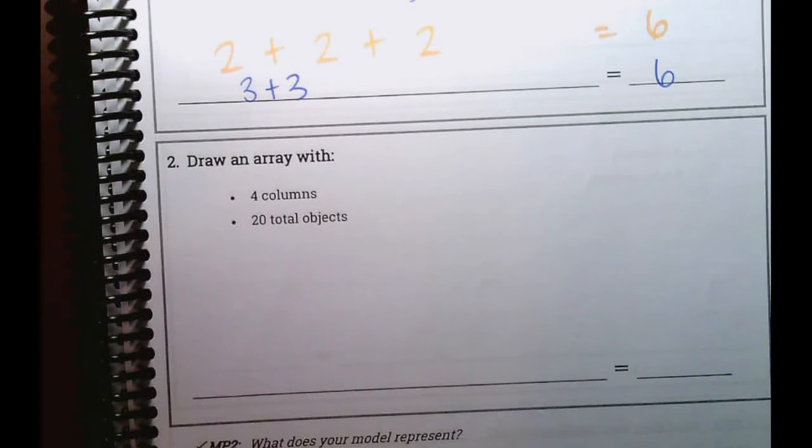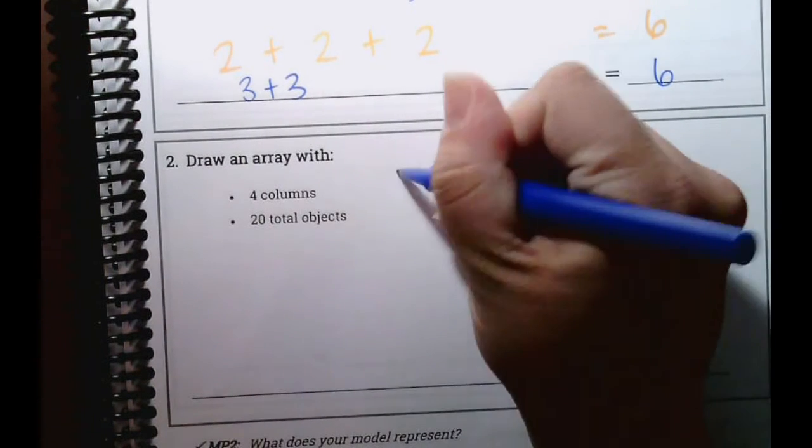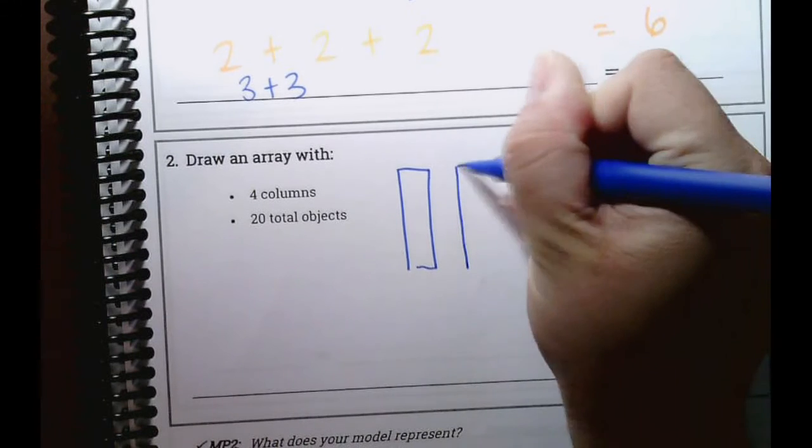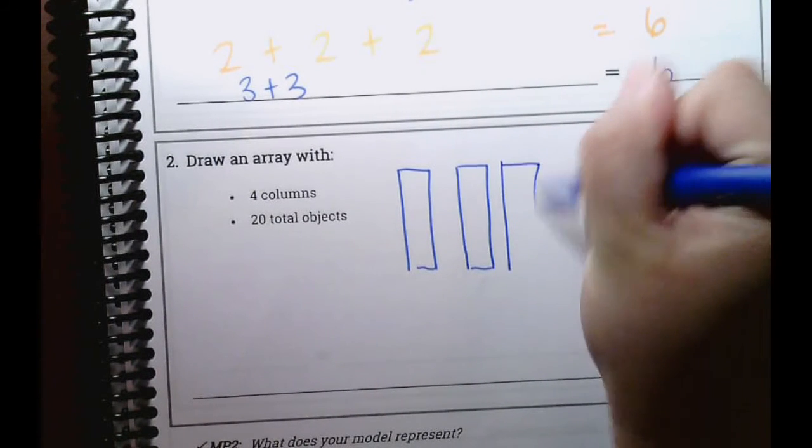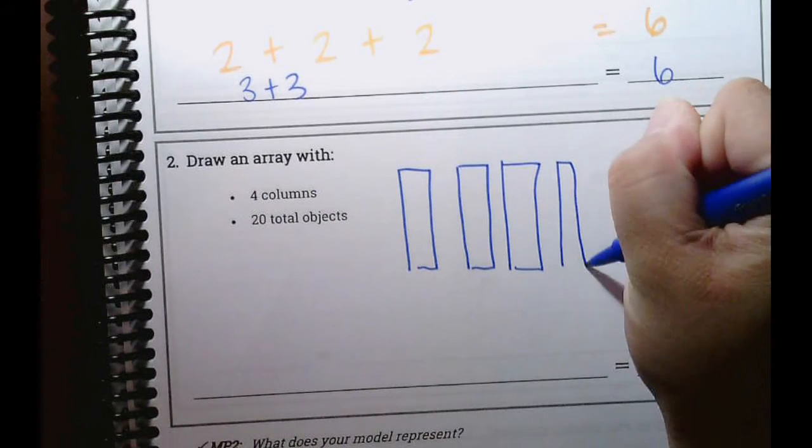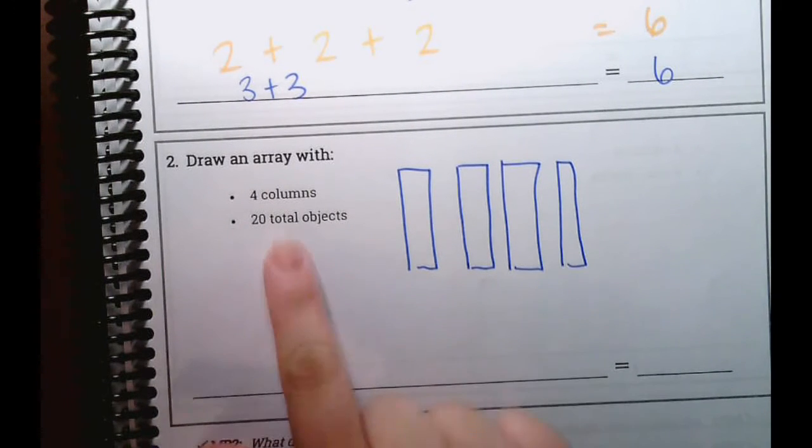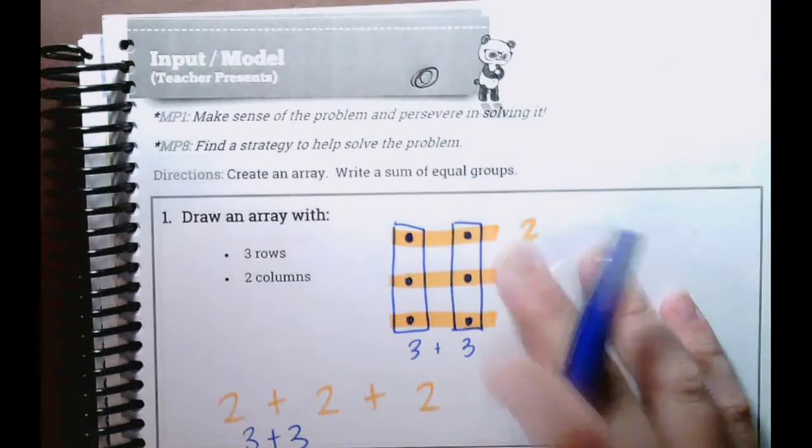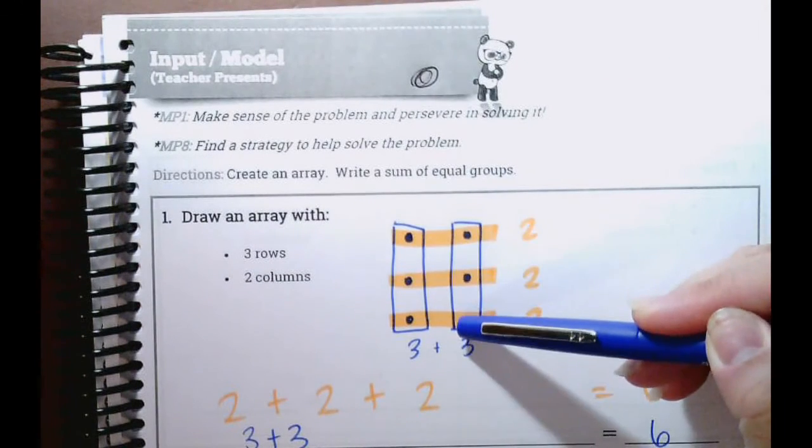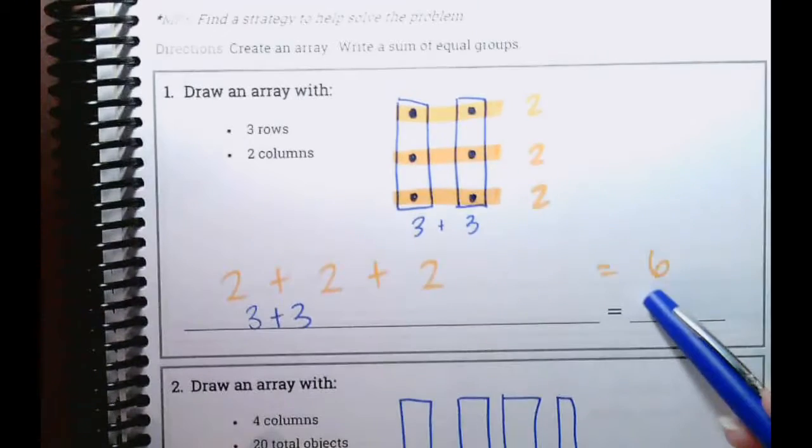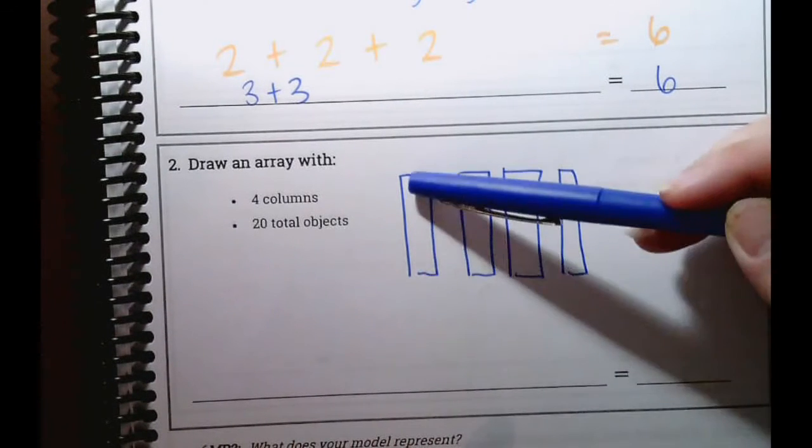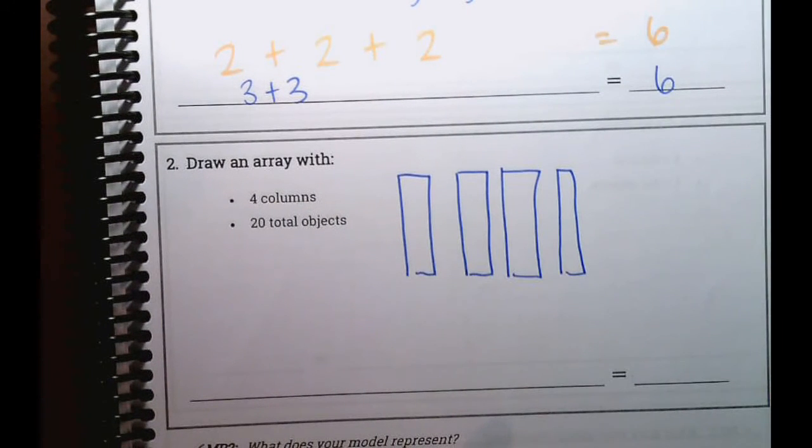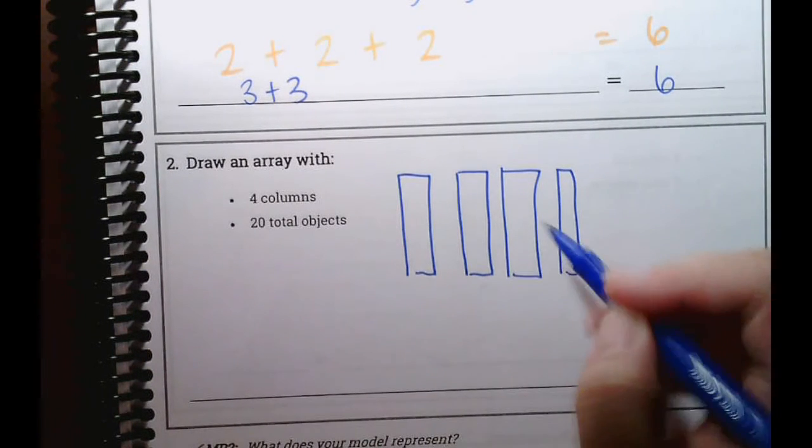So using the information that we're given, we're going to fill in our array. So how many columns do we have? Four. Good. So we're going to take our blue marker because that's what we're using. We're going to set up our house. One, two, three, four. And there are 20 total objects. So in here, these dots where the orange and the blue meet are our objects. And there were six objects total in this example. So here, there are 20 objects. So we need to fill them in. If I put all 20 in this one column, would it make sense? No, right? So we need to distribute them evenly.